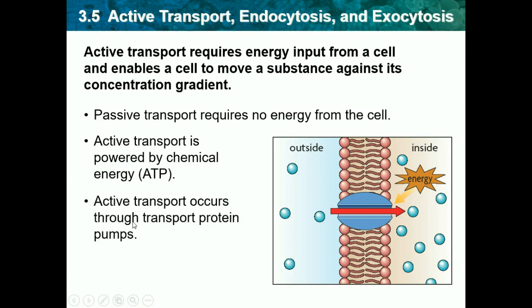Active transport occurs through transport protein pumps. This blue area is the transport protein pump, and it pumps molecules through the membrane into the other side of the cell, which would have more molecules. So it goes from a low concentration to high concentration.